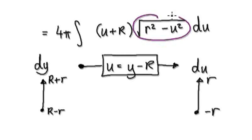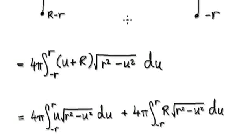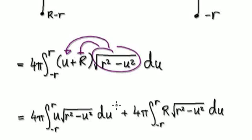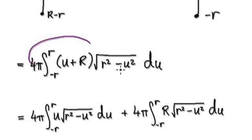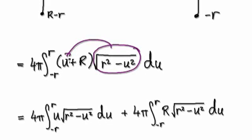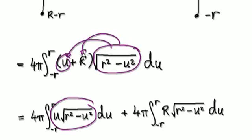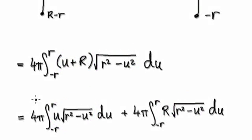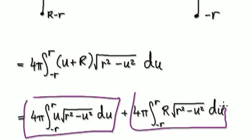Multiply this out. So here you've got this expression — multiply it out and that gives you this. Let's evaluate this as two separate integrals. You've got one integral here — that's this bit — and then this thing here is another integral. So evaluate them separately.